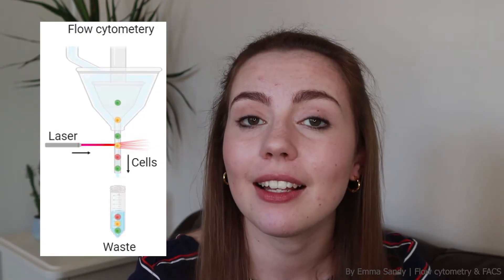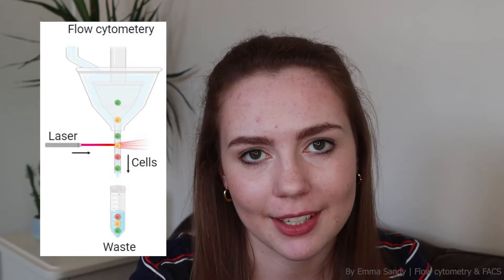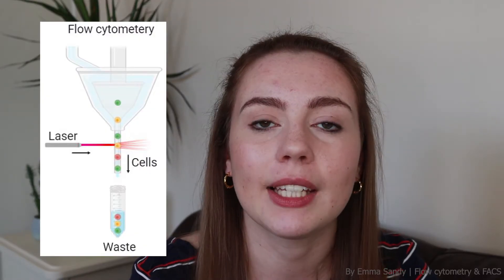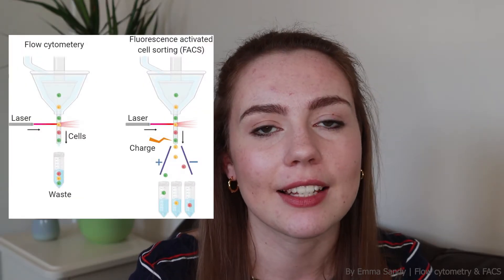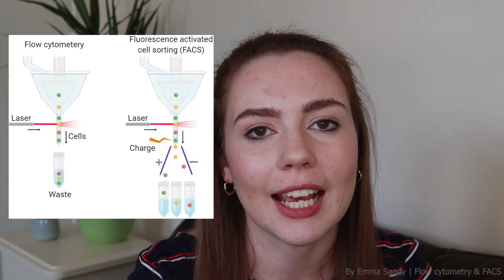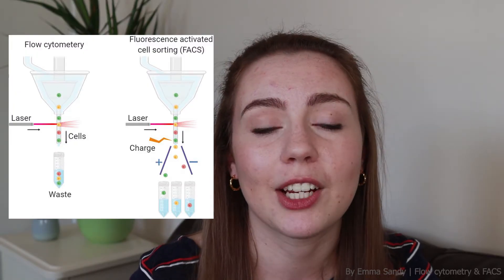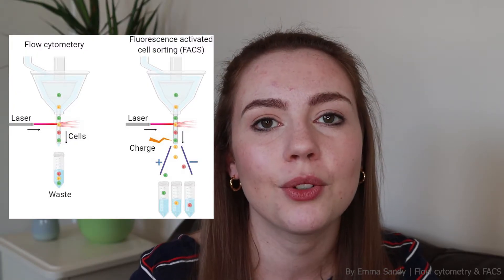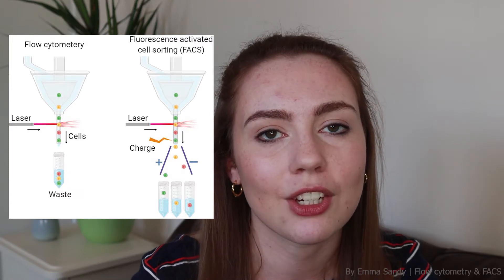In flow cytometry, cells are analyzed and we collect the data, but the cells themselves go into the waste and are not collected — the only output is the data. The difference with FACS is that we can analyze and then collect specific cells of interest. People frequently confuse the two, so it's not technically FACS unless you are sorting for a cell population. But if we're collecting data on every individual cell, what on earth do you do with it?